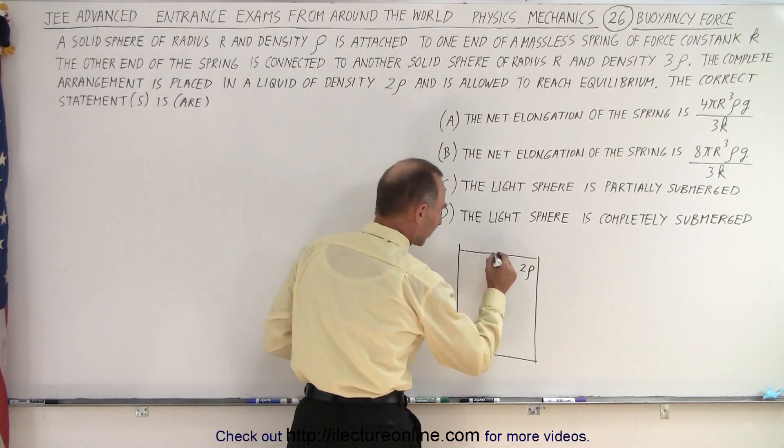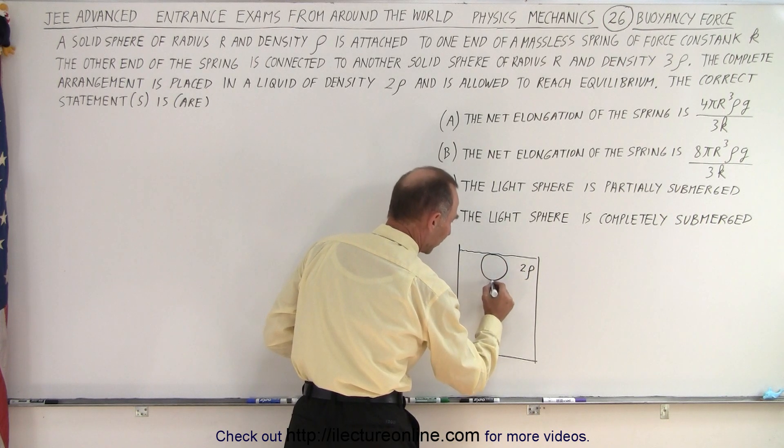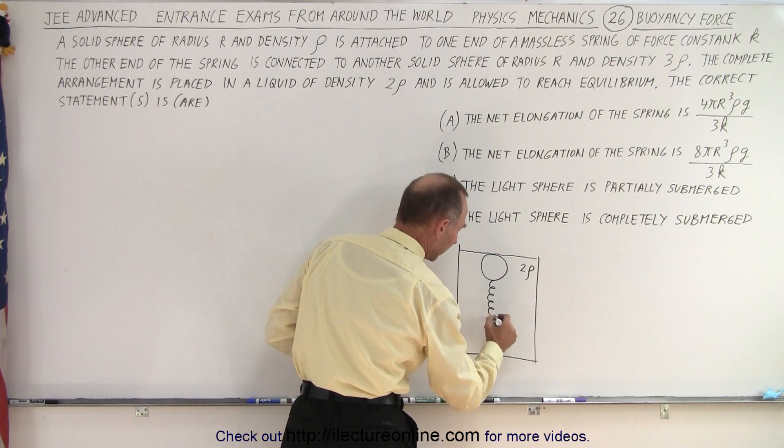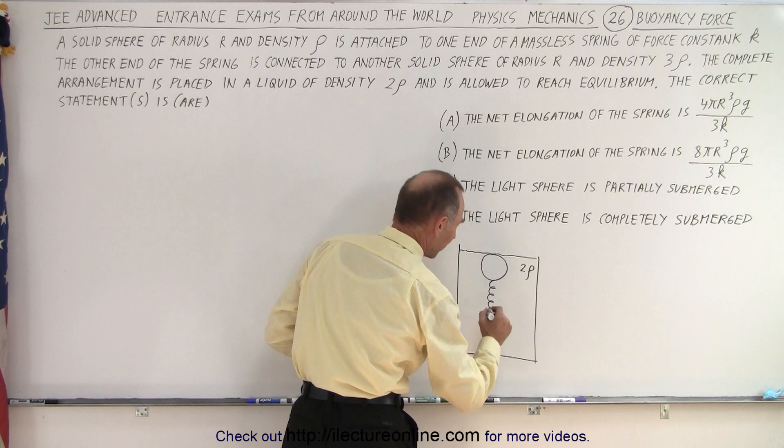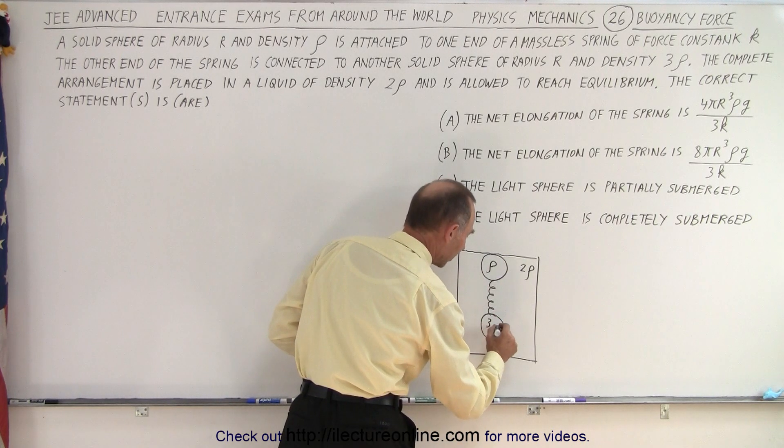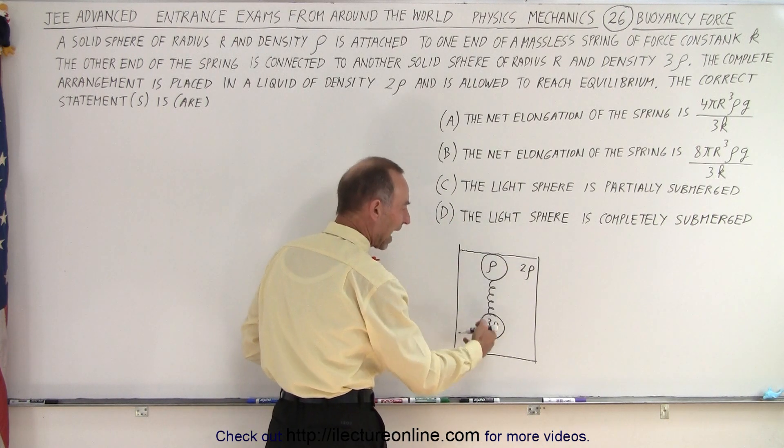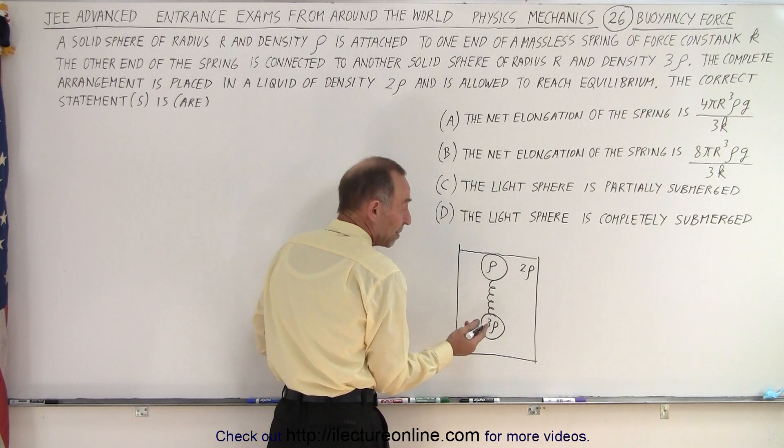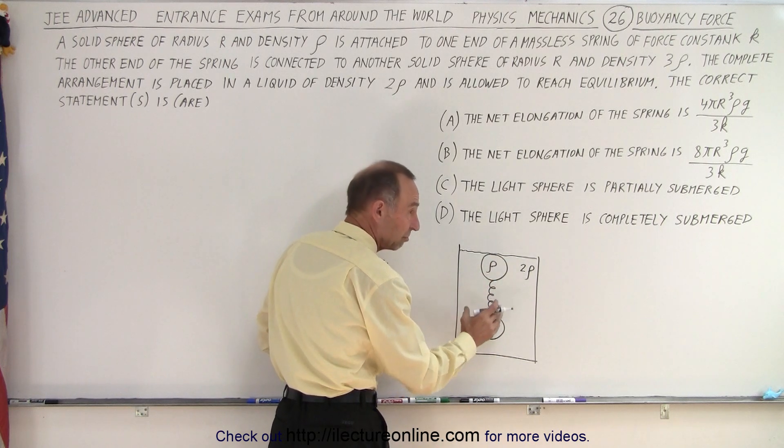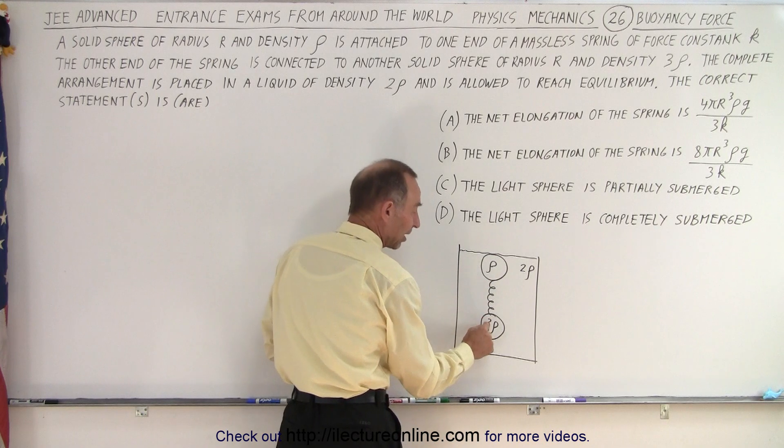And so I would expect the lighter sphere to go to the top, then have a spring, and then the heavier sphere at the bottom. So this is the sphere with density rho and the sphere with density 3 rho. So notice that the liquid has the density that's the average density of the other two, which means that the total arrangement will just barely float.